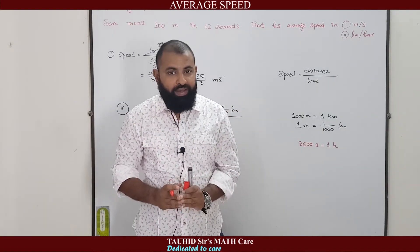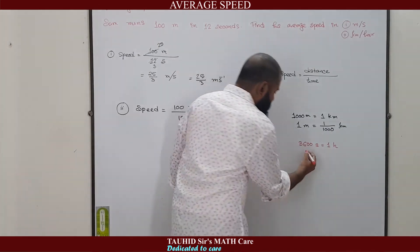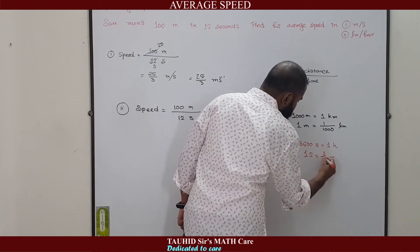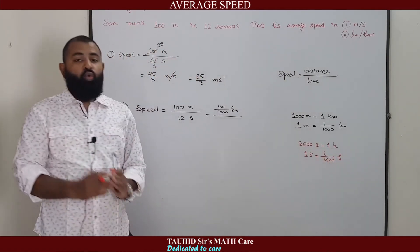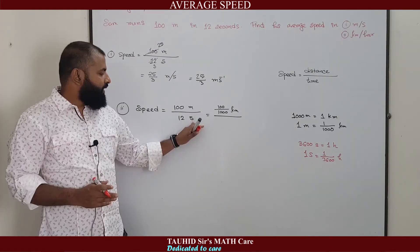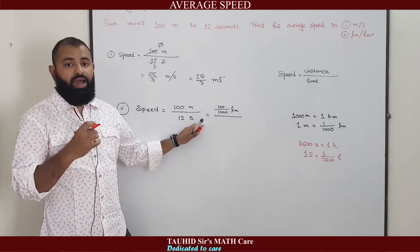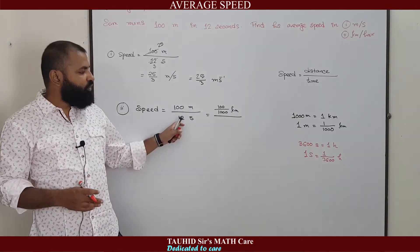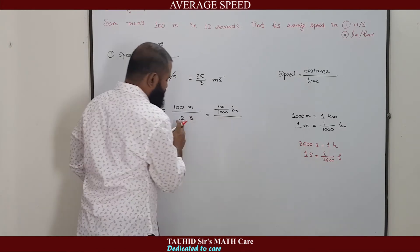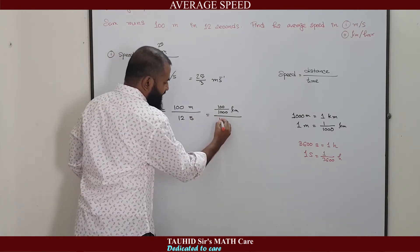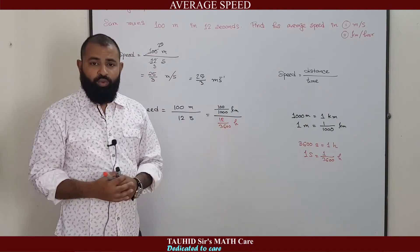We also know that 3600 seconds equals 1 hour, which means 1 second equals 1 divided by 3600 hours. Therefore, when converting seconds to hours, we divide the quantity by 3600. That means 12 seconds can be written as 12 divided by 3600 hours.